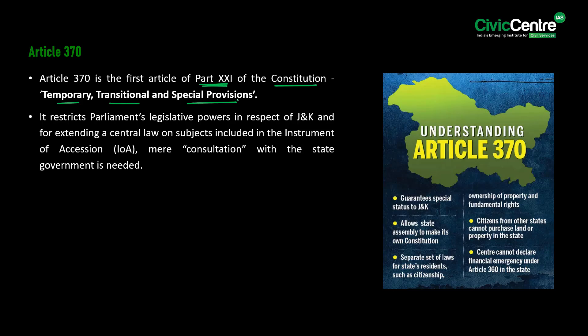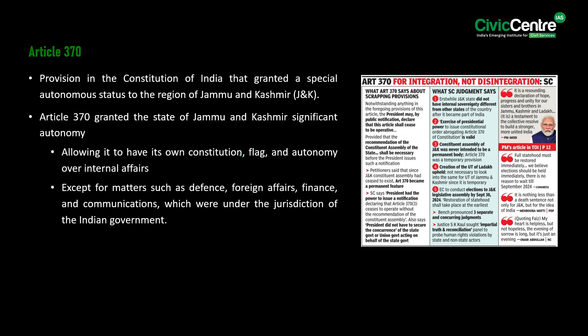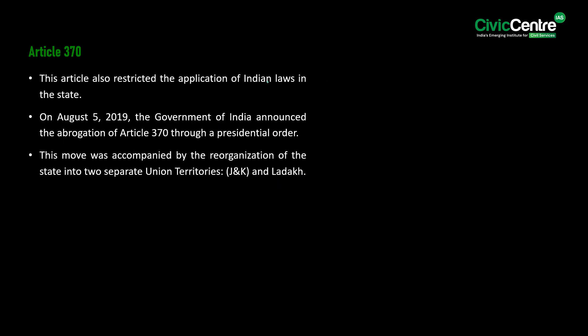Article 370 restricted Parliament's legislative powers in respect of Jammu and Kashmir, granting the state significant autonomy — allowing it to have its own constitution, flag, and autonomy over internal affairs, except for matters such as defence, foreign affairs, finance, and communications, which were under the jurisdiction of the Indian government. This article also restricted the application of Indian laws in the state. On August 5th, 2019, the Government of India announced the abrogation of Article 370 through a presidential order. This move was accompanied by reorganization of the state into two separate union territories: Jammu and Kashmir, and Ladakh.